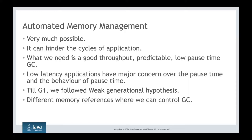For example, I have seen an application that scanned complete newspaper images and converted them to online PDF formats. For that application, it is perfectly fine to look for good throughput — nothing will happen if the application pauses for one, two, five, or even ten seconds, because there is no user interface with someone saying 'Why did this freeze?' So you should choose a garbage collector that gives good throughput without constantly stopping the application.